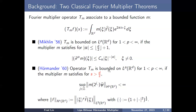Four years later, Hörmander generalized these results using the Sobolev space H^s, which is an L^2-based inhomogeneous Sobolev space. If m satisfies the condition with s greater than one-half of the dimension, then T_m is bounded on L^p. The relationship between the Mikhlin condition and the Hörmander condition is that if a multiplier is Mikhlin, then it is also Hörmander — so Hörmander is a true generalization.